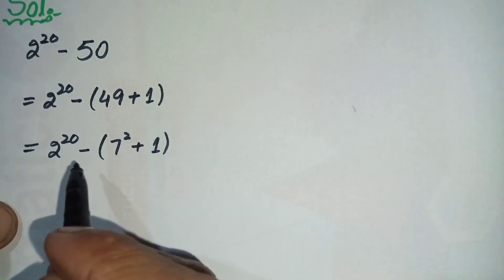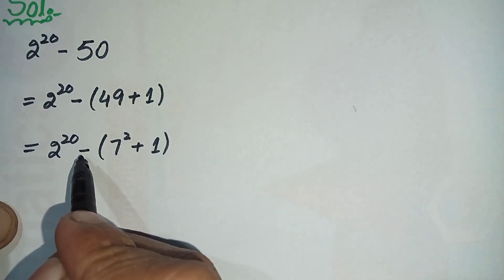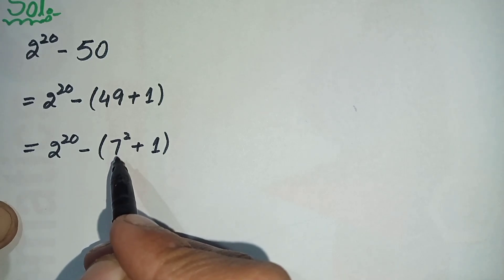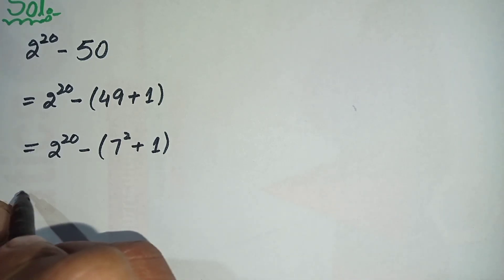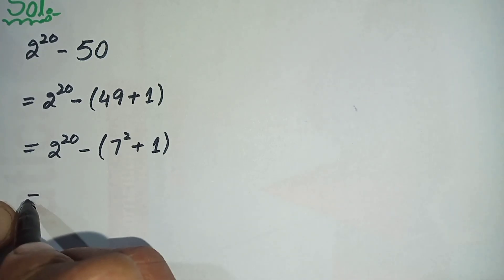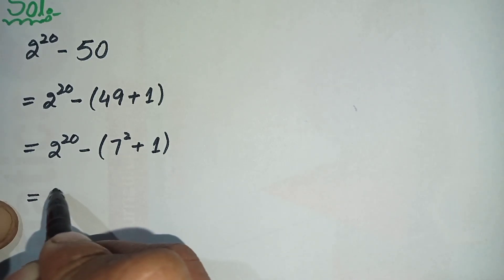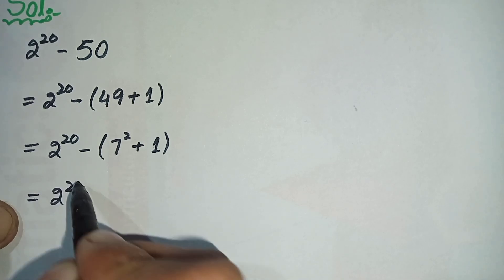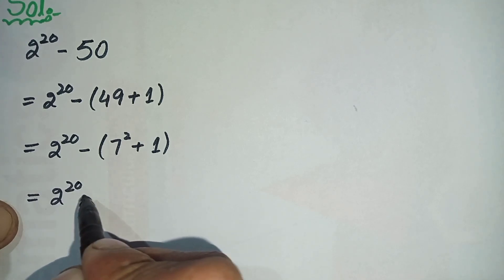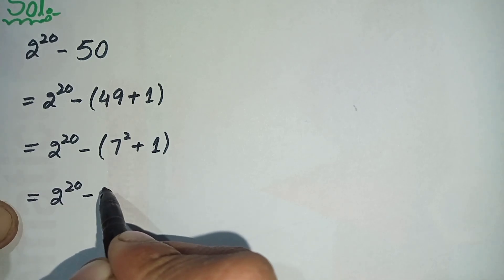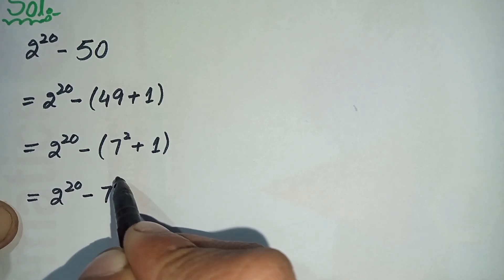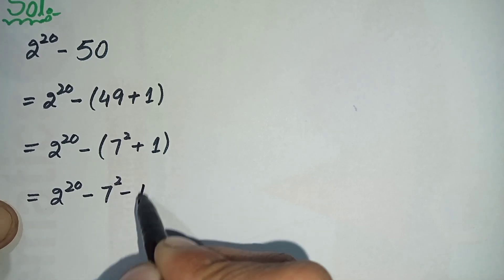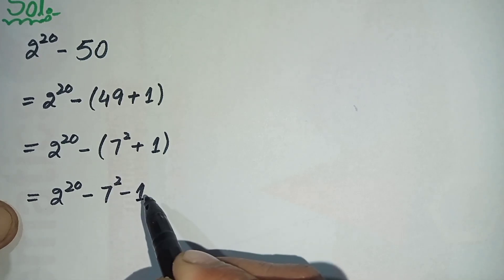In the next step we will multiply the negative sign inside the parenthesis. So this equation will become 2 raised to power 20 minus 7 squared minus 1.